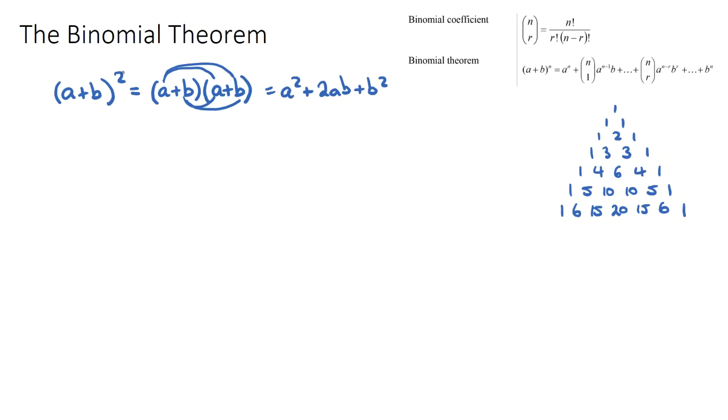But when we start getting IB questions where it's A plus B to the power of five, if we were to write the bracket A plus B five times, we'd be sitting there all day trying to expand these brackets. There is a shorter way to do this, and it's called the binomial theorem. The formulas they give you in the IB exams do look a little bit complicated, but we'll go through an example and they're actually not as bad as they look.